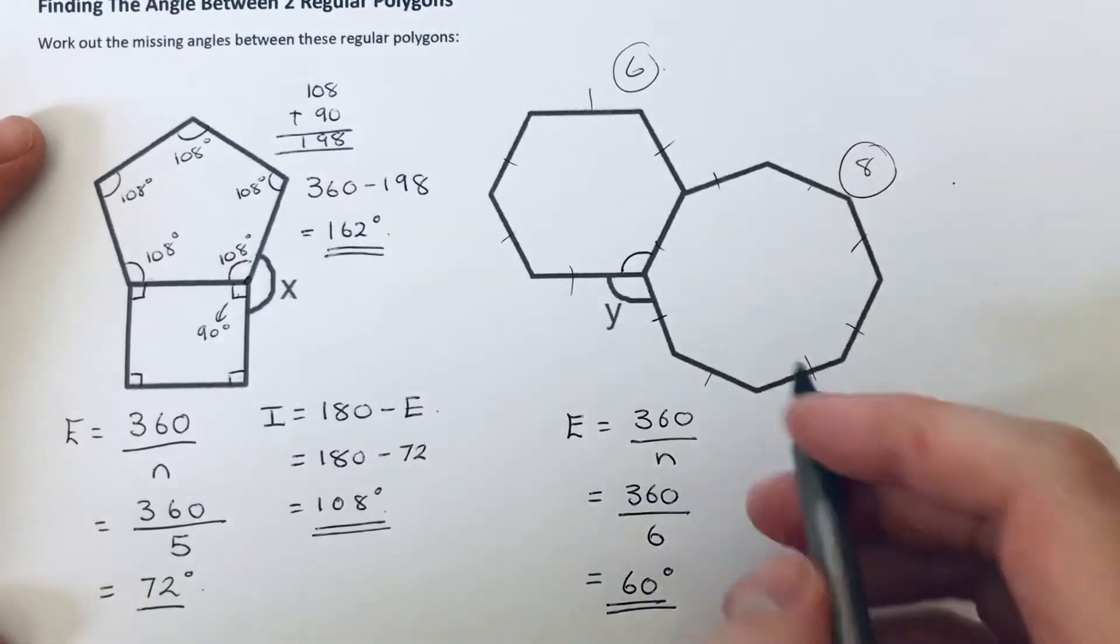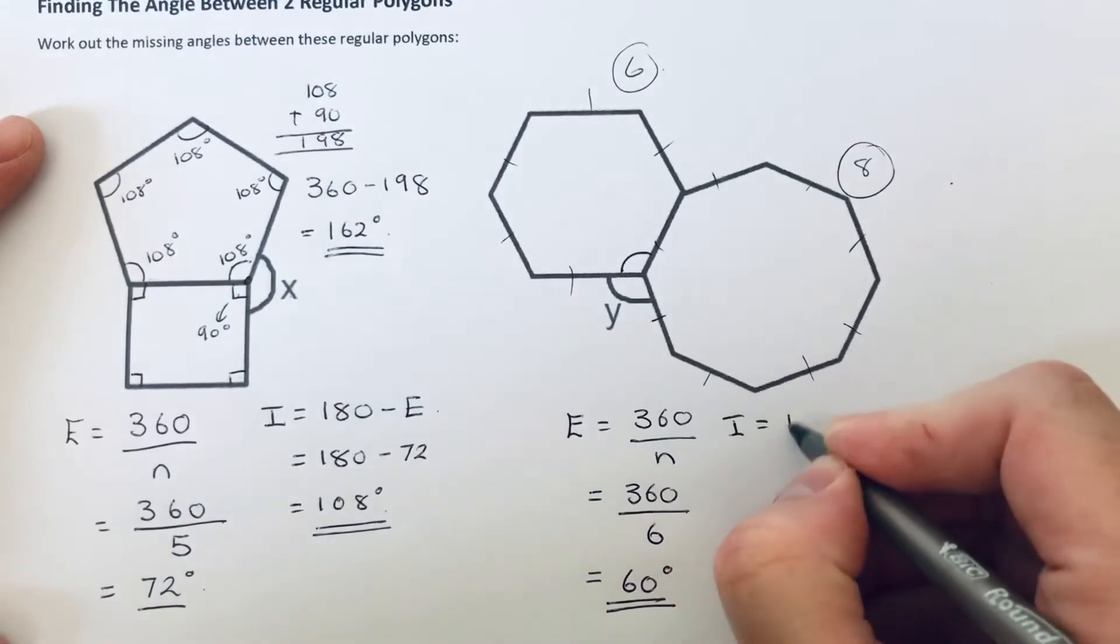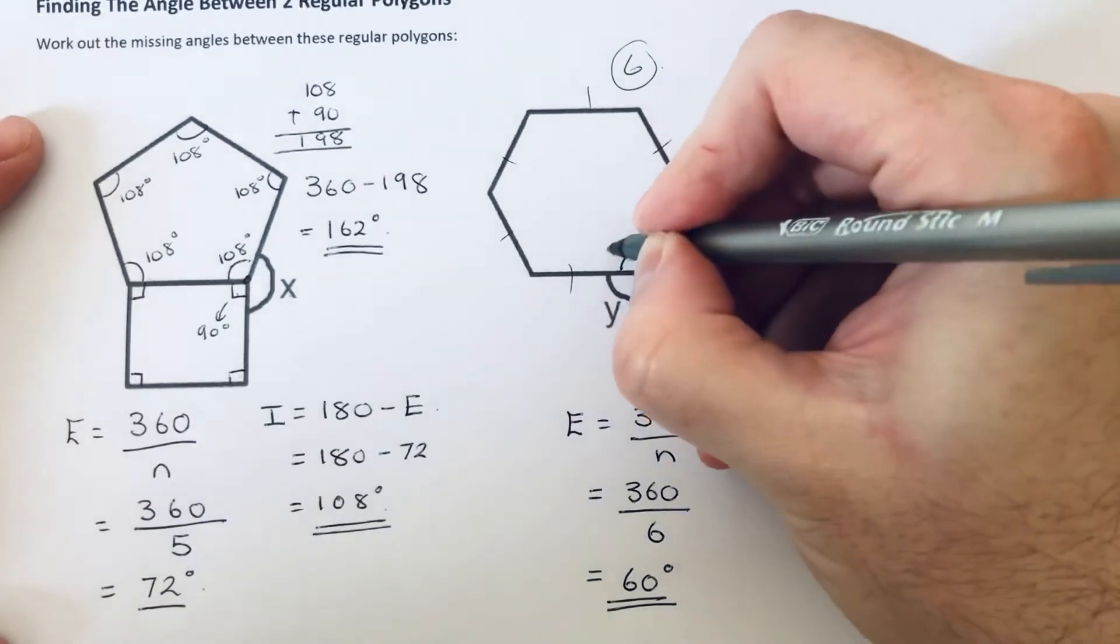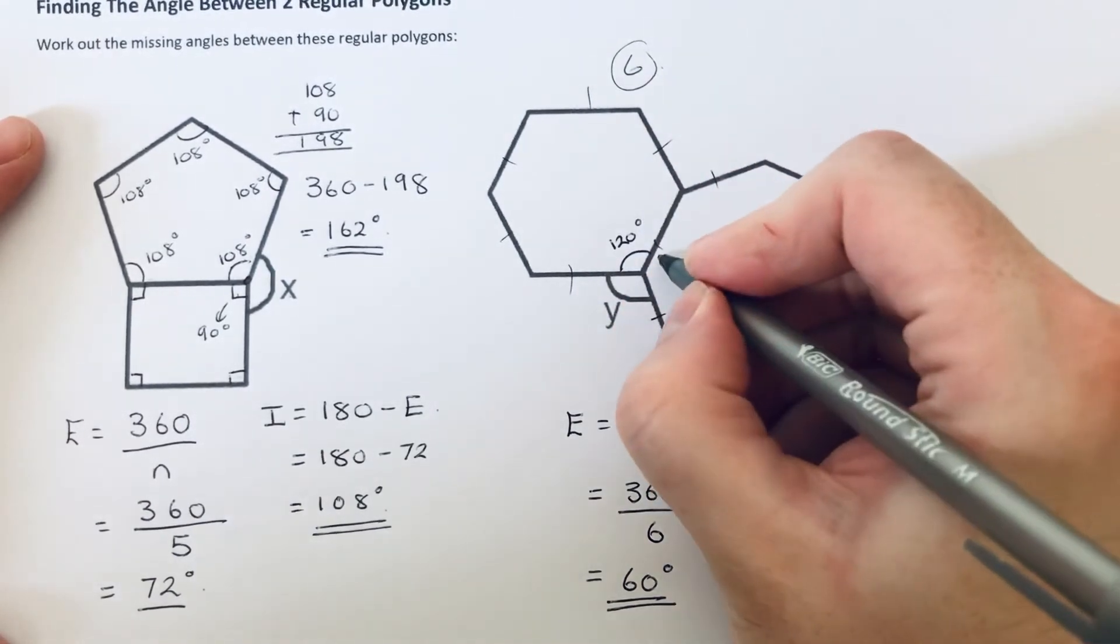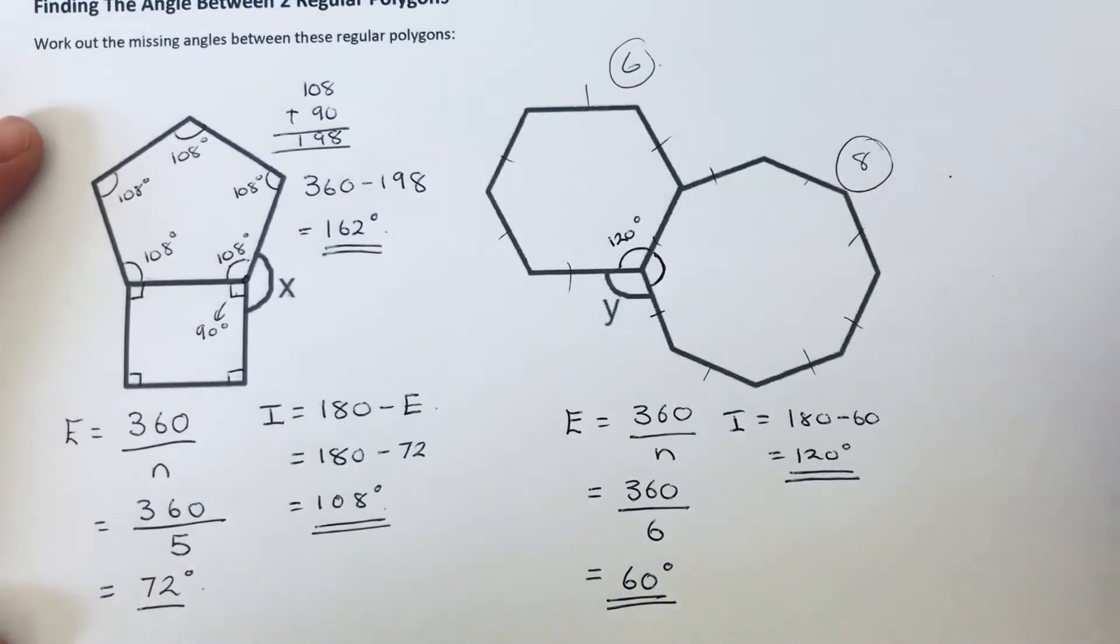So we then take that away from 180 to give us the interior angle, which is 120 degrees. So this angle here is 120 degrees. So we now need to work out the interior angle for the octagon.